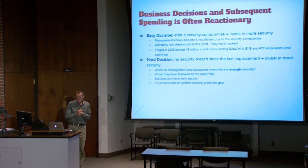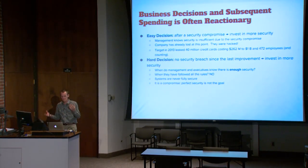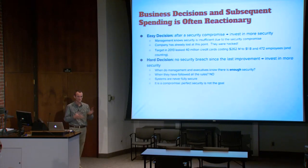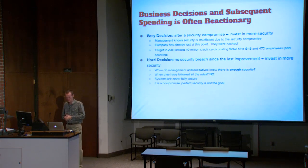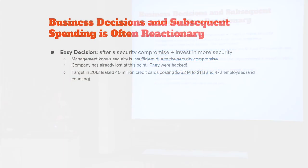Businesses always make decisions based on available information and how to better the business. After a security compromise, it's easy to make the argument that you want to invest in more security — we got compromised, it's clear we have insufficient security, time to invest more. However, the company has already lost at that point. The data's gone and it doesn't come back. No matter what you do, it's never coming back. There's already negative publicity and you're already losing money.